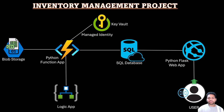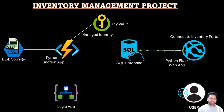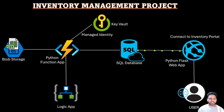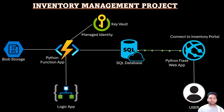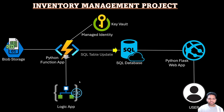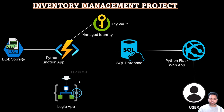So our services — Blob Storage, Python Function App, Key Vault, and SQL Database — are all configured properly and working as expected. That's all for this video. In the next video I'll be configuring the Logic App where two tasks will be created: first, a POST request from the Function App will trigger an HTTP request, and once that is done, an email will be sent to the user. Thanks for watching and see you in the next video.